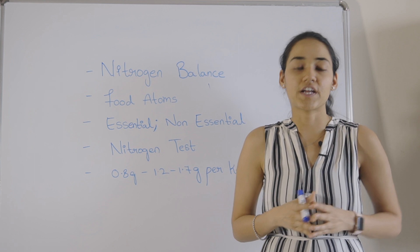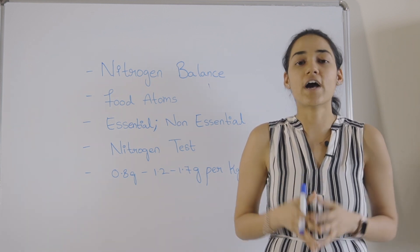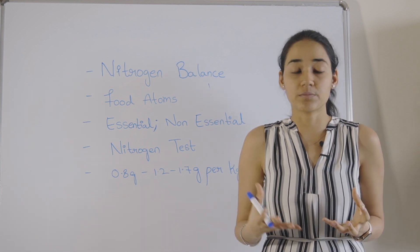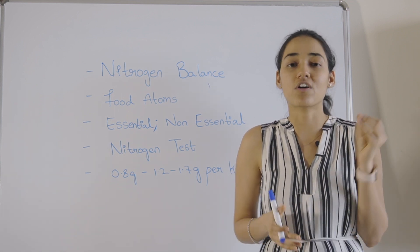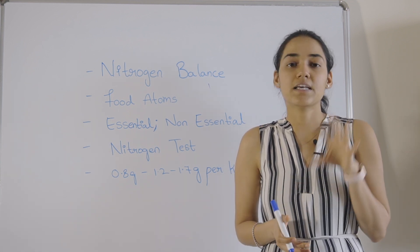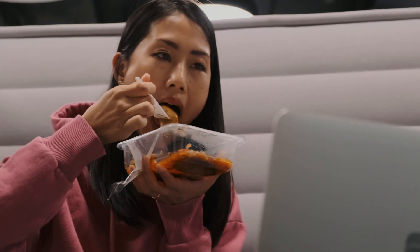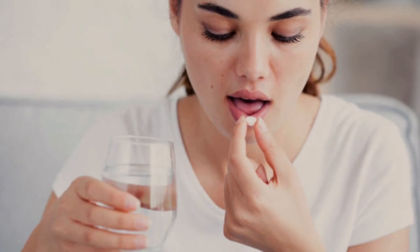Now how do we maintain a positive nitrogen balance? In order to maintain a positive nitrogen balance, you have to make sure that you get both essential and non-essential amino acids. But essential amino acids are very important because your bodies cannot produce them. The name itself implies that it's essential because you cannot produce it. You have to get it externally either through your diet or you have to supplement it. Only then you can get into a positive nitrogen balance.